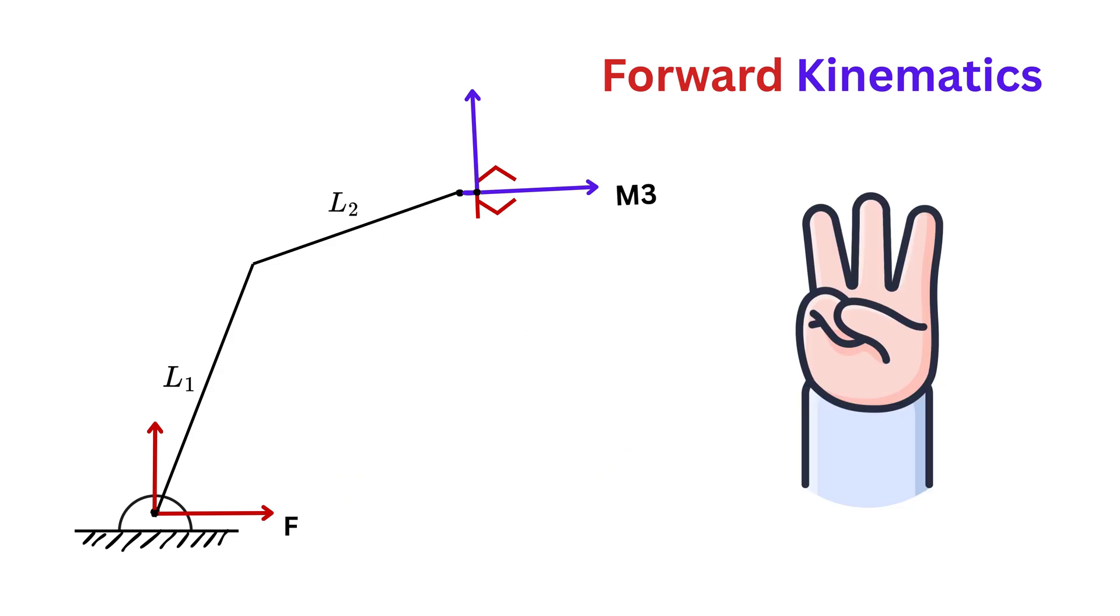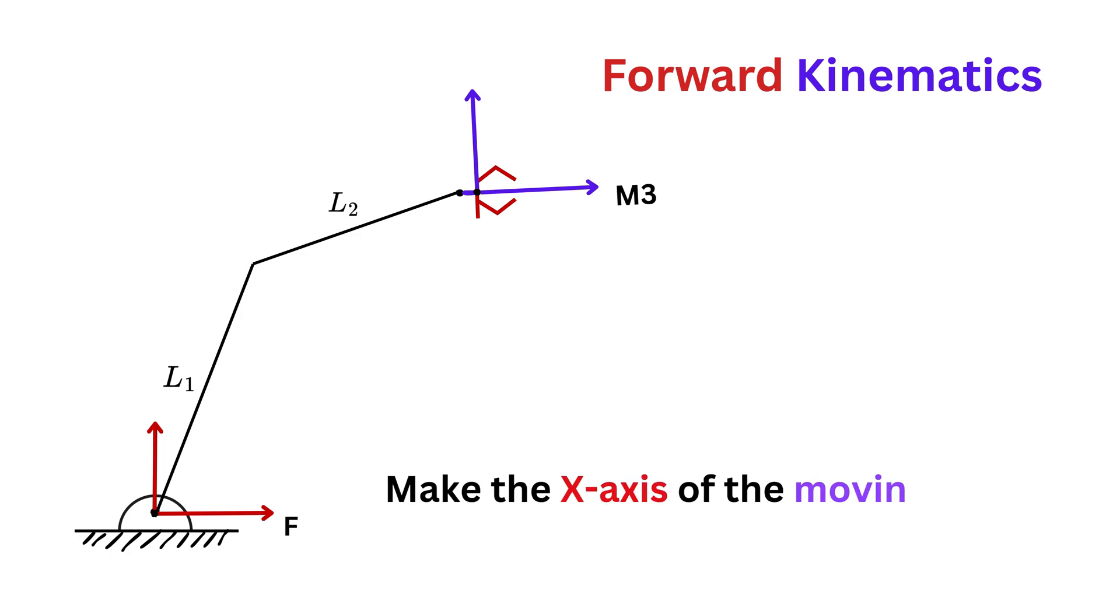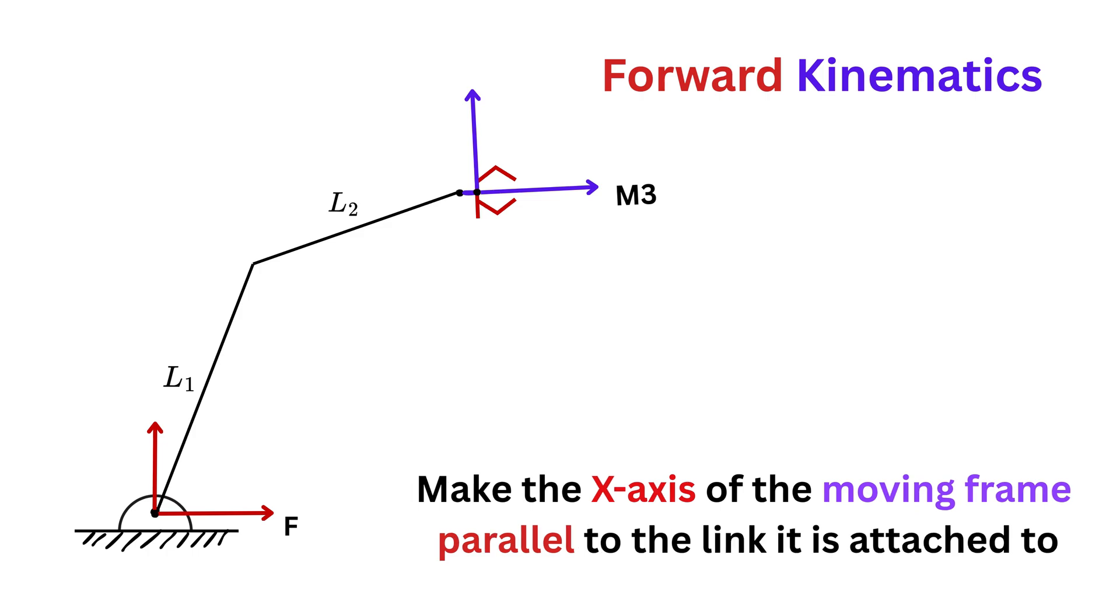In the third step, we assign moving frames to each joint or link. To do that, we make the x-axis of the moving frame parallel to the link it is attached to. Like moving frame M1 will be assigned to this link one, and therefore, first make it aligned with the previous frame like this. Then rotate it in such a way that the x-axis of the moving frame M1 will be parallel to this link one.